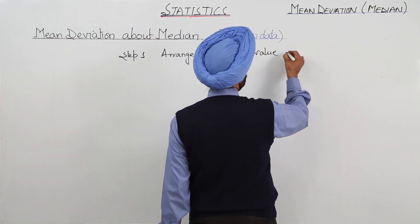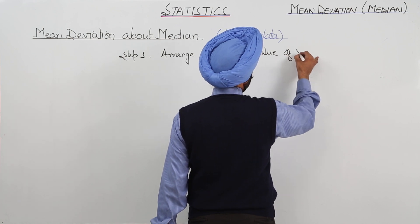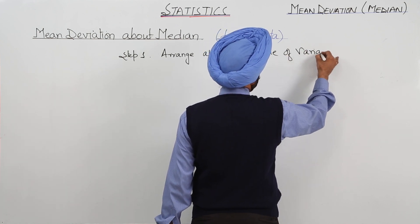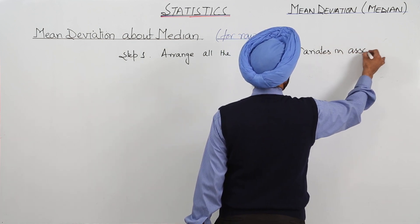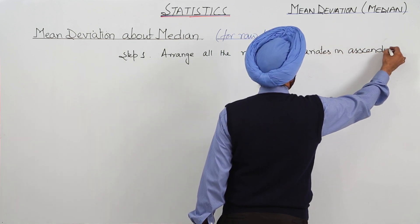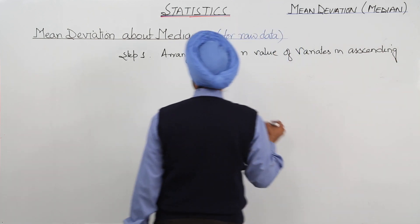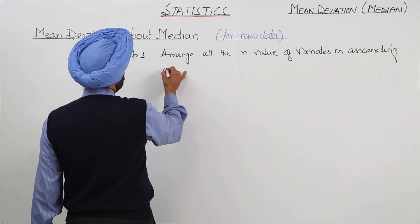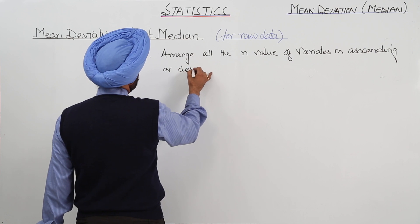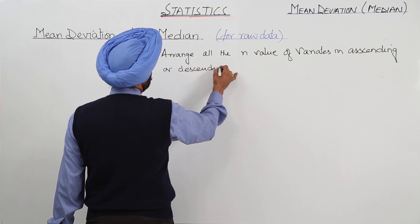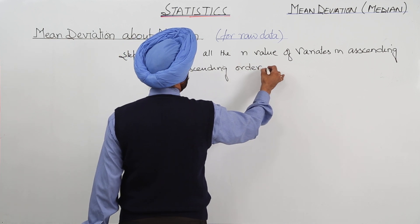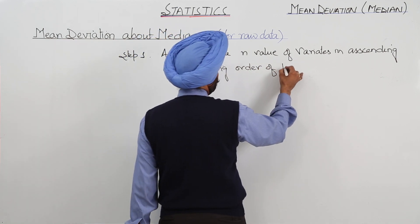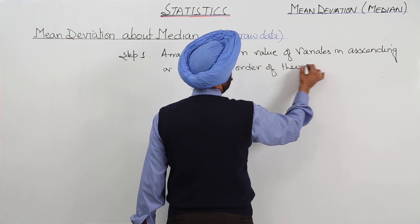Arrange all the n values of variates in ascending or descending order of their magnitude.